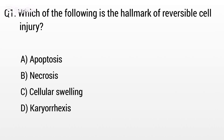Question 1. Which of the following is the hallmark of reversible cell injury? Option A: Apoptosis. But the right answer is Option C: Cellular swelling.